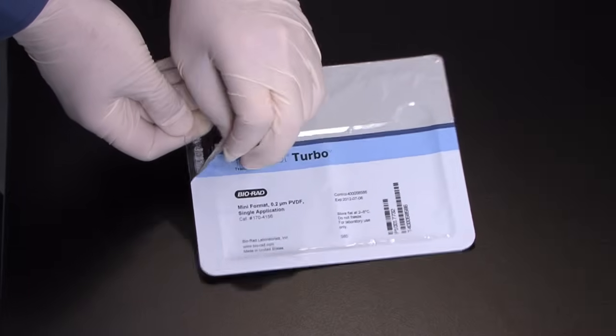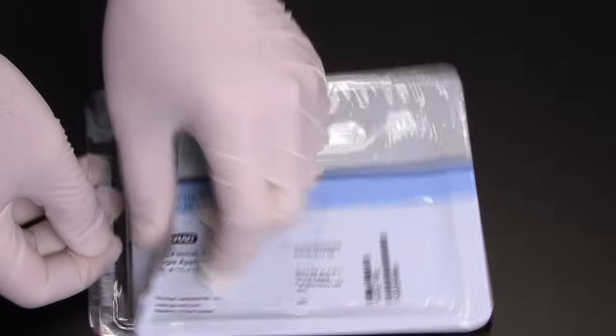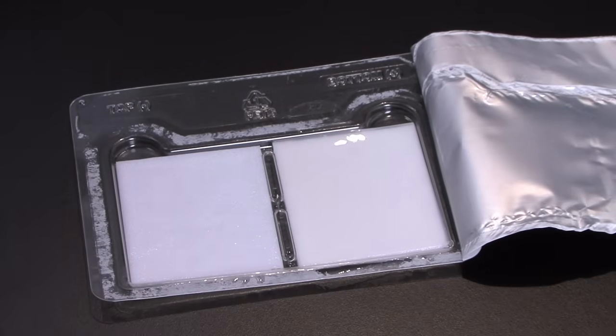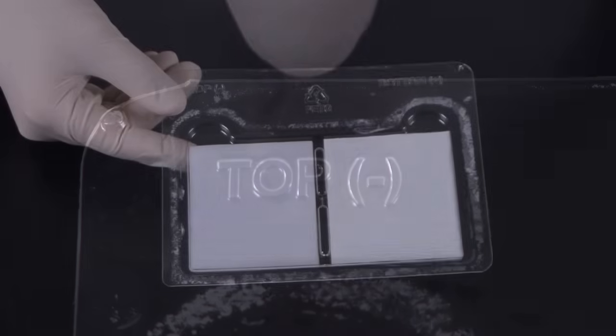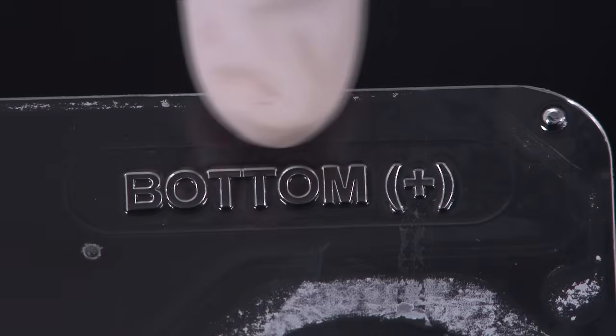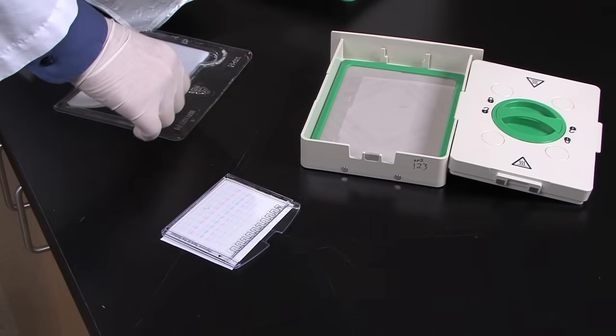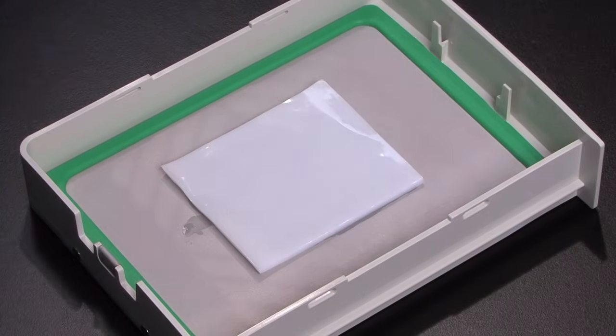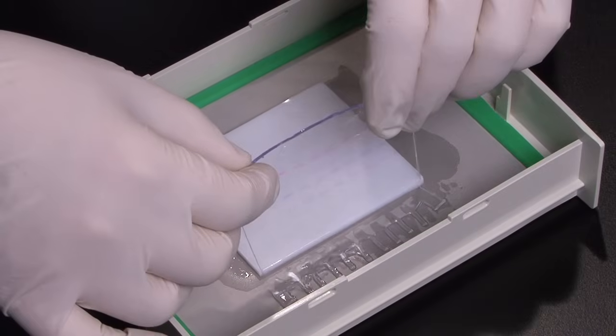To assemble a transfer pack, open it by peeling away the top foil. Here we will use a mini-sized pack. The mini transfer pack tray contains two ion reservoir stacks located side by side. Each stack can be identified by the labeling on the tray. The bottom stack contains the membrane and is placed in the bottom of the cassette with the membrane facing up. Roll the stack and membrane gently with the blot roller to remove any air trapped between the stack and the cassette.